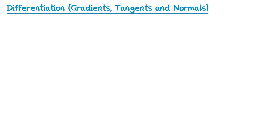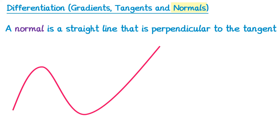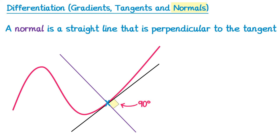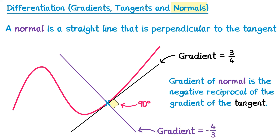The word 'normal' in the title hasn't been covered yet. A normal is a straight line that is perpendicular to the tangent. If we draw a tangent at a point on a curve, the normal goes perpendicular to it, creating a 90 degree angle. Since perpendicular lines have gradients that are negative reciprocals of each other, the gradient of a normal is the negative reciprocal of the gradient of the tangent. For example, if the tangent has gradient three quarters, the normal has gradient negative four thirds.